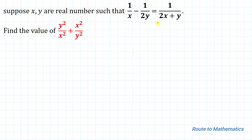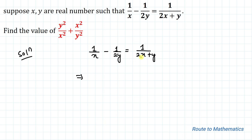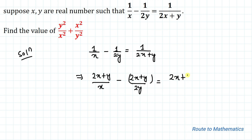Here we have a given equation. Let's find the value of the given expression. Without any delay let's start the solution. We have 1/x minus 1/(2y) equals 1/(2x+y). In the next step, let's multiply both sides by (2x+y). So multiplying by (2x+y) we have (2x+y)/x minus (2x+y)/(2y) equals 2x+y.